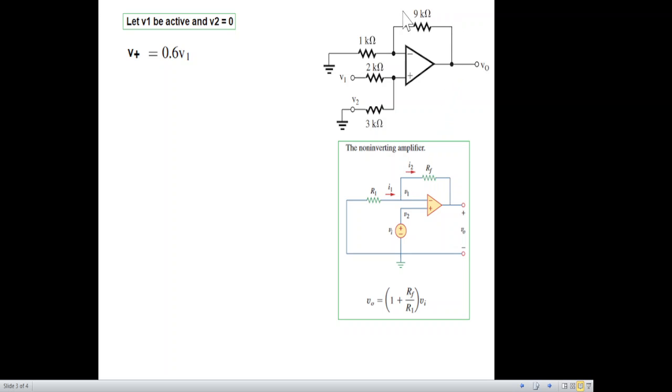In this case, feedback is 9k and R1 is this resistance, this one, not these resistances, is 1k. So we have to keep that in mind. Using this formula, we find the output. We are calling this as v_o dash.